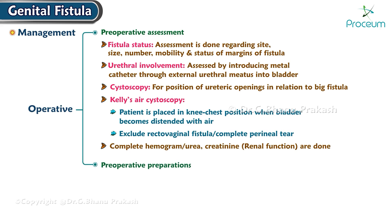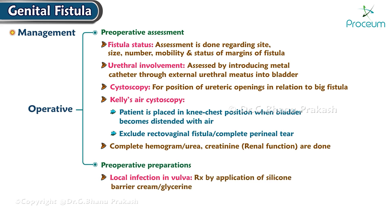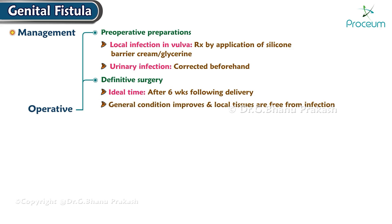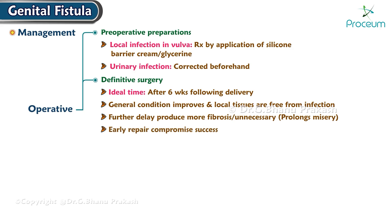Pre-operative preparations: Local infection in the vulva should be treated by application of silicone barrier cream or glycerin; urinary infection should be corrected beforehand. The ideal time of surgery is after six weeks following delivery, by which time the general condition improves and local tissues are likely to be free from infection. Further delay produces more fibrosis and is unnecessary, prolonging the patient's misery. Early repair may compromise success. Surgical fistula recognized within 24 hours may be immediately repaired if small. Radiation fistula should be repaired after 12 months.